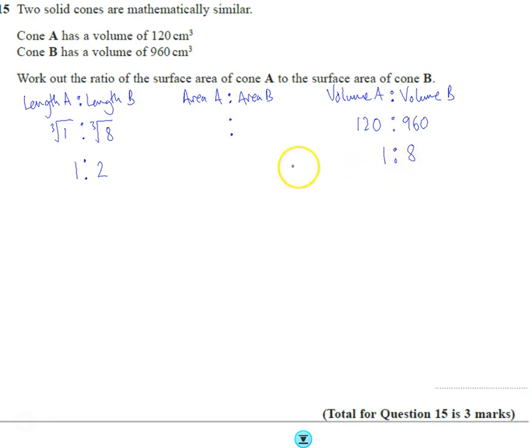Now using that, we know that the square, not the cube root will give us the volume, the square of the length scale factors, or how the length has changed, is going to give us how the areas change in similar shapes. So it's 1 to 4.